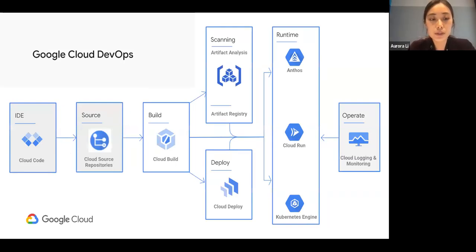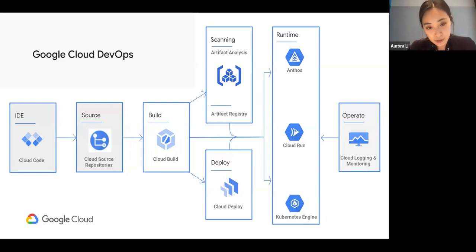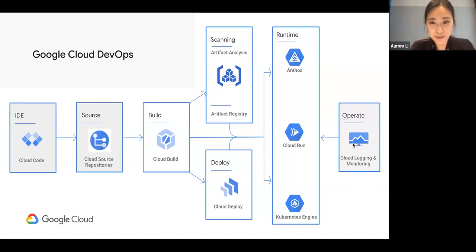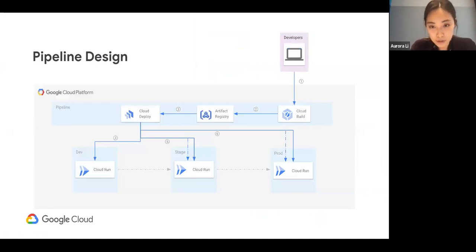Before the demo, here's the architecture I'll be showing. Everything runs on Google Cloud. I'll use Cloud Code as my IDE, push code to Google Cloud Source Repository, run CI steps in Cloud Build, then use Cloud Deploy for deployment. For today's demo the runtime is Cloud Run, and Cloud Logging and Monitoring are available for troubleshooting.